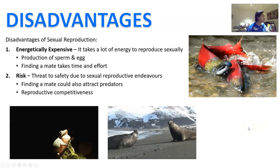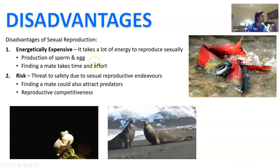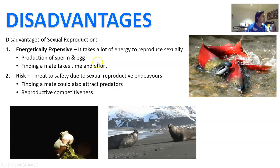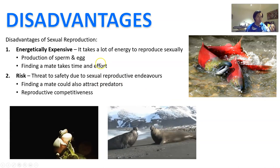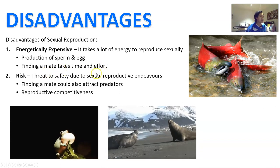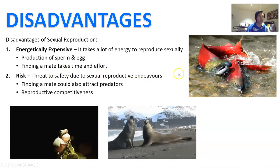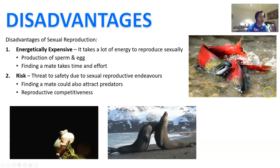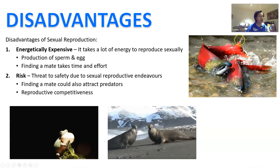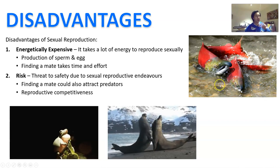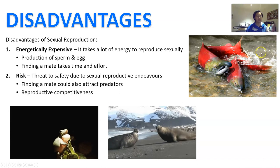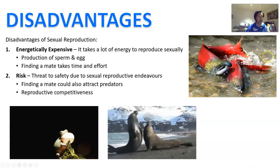There are downsides, obviously. Having kids takes a lot of energy — as your parents would know, it takes a lot of energy to reproduce sexually, both in terms of production of sperm and egg, and also finding a mate takes a lot of time and effort. For example, you can see in documentaries where salmon swim back up the river they were born in and then mate, and then they all just die en masse because having sex takes up that much of their effort.